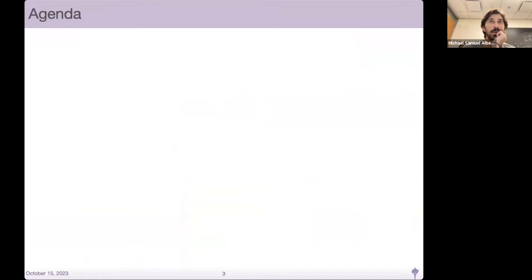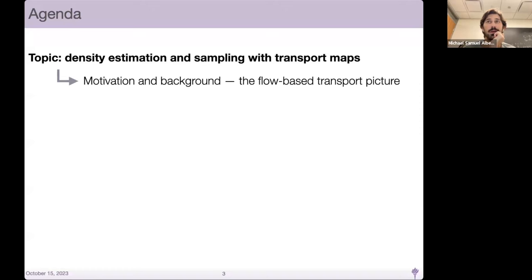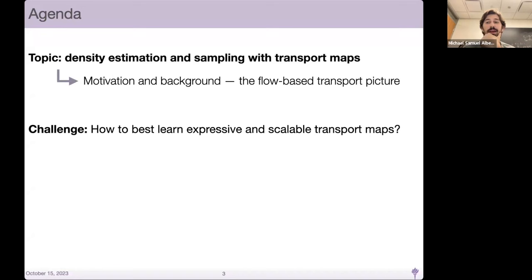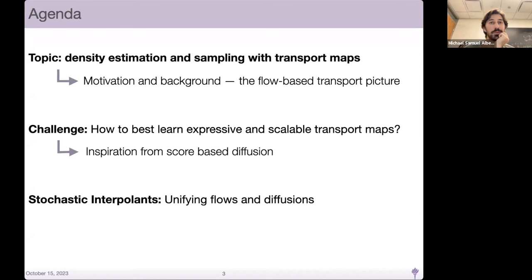The agenda is generally about density estimation and sampling with transport maps, motivating the flow-based picture of doing this, and what is the best way to learn expressive and scalable maps. The pitch is that if we take inspiration from score-based diffusion in terms of how they choose a path in the space of measures and regress on that path, this opens up a paradigm for more efficient learning algorithms for learning dynamical transport.